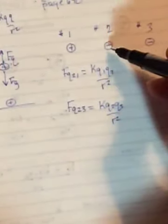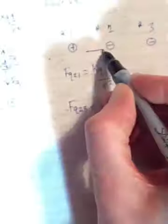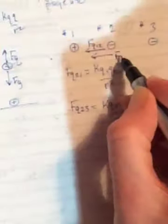The first one is going to end up being a negative force because one's positive and one's negative, so it's going to be attractive. So number 1 is going to put a force on 2 this way, so FQ12 will go that way. And then number 3 on number 2, it's going to be positive and positive is repelling, so it will also be putting a force on number 2 going to the left.